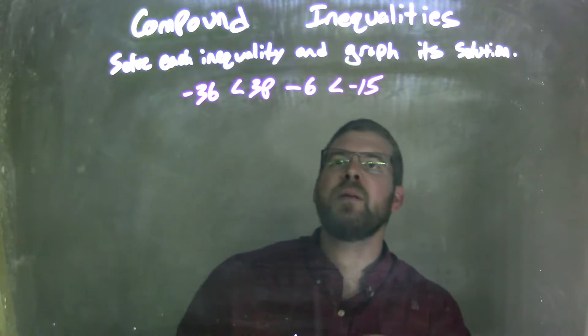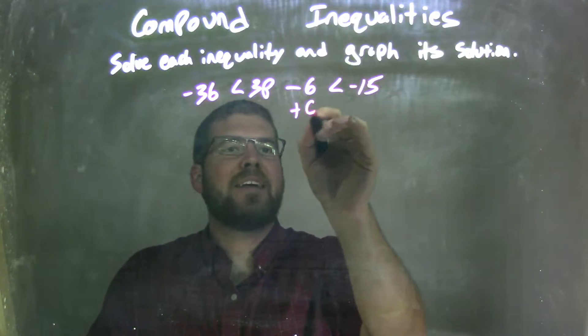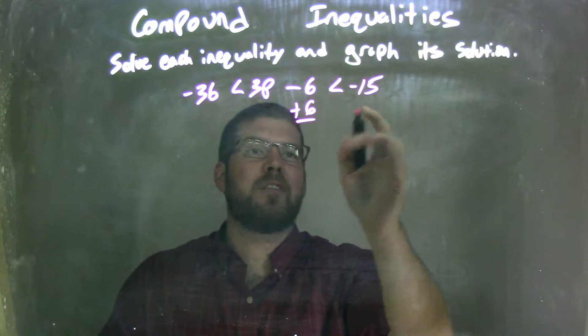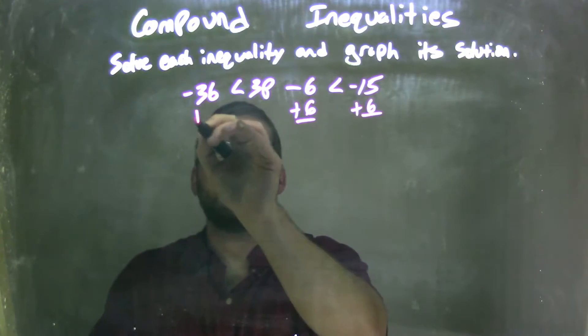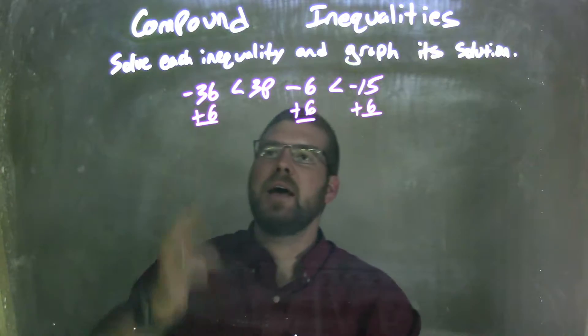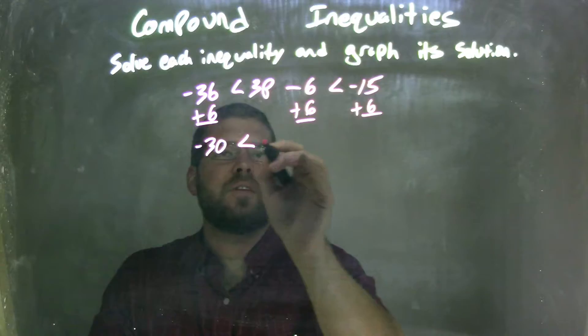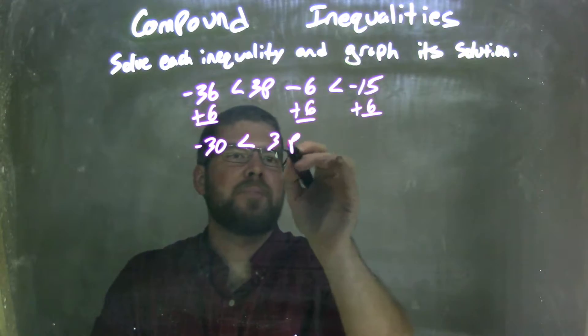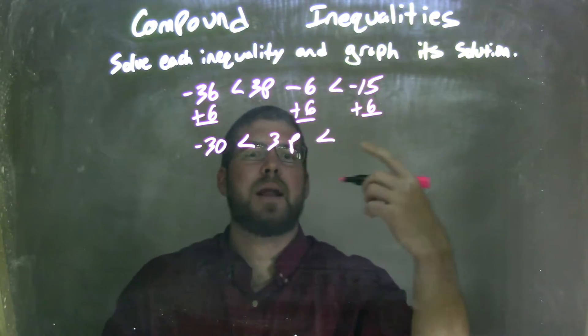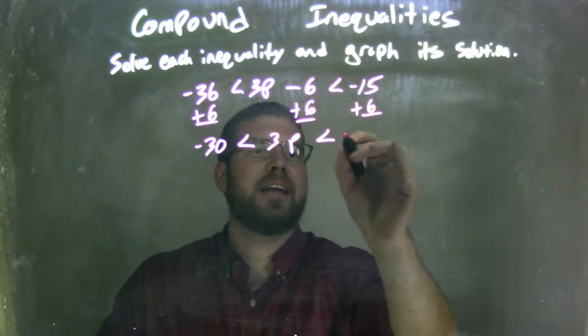My first step is I'm going to add a 6, and when I add a 6, I'm not going to just do both sides, but all sides. So I'm going to add a 6 here, and I'm going to add a 6 here as well. Negative 36 plus 6 is negative 30, and that's less than whatever's on the inside, which is 3p now, which is less than negative 15 plus 6, which is negative 9.